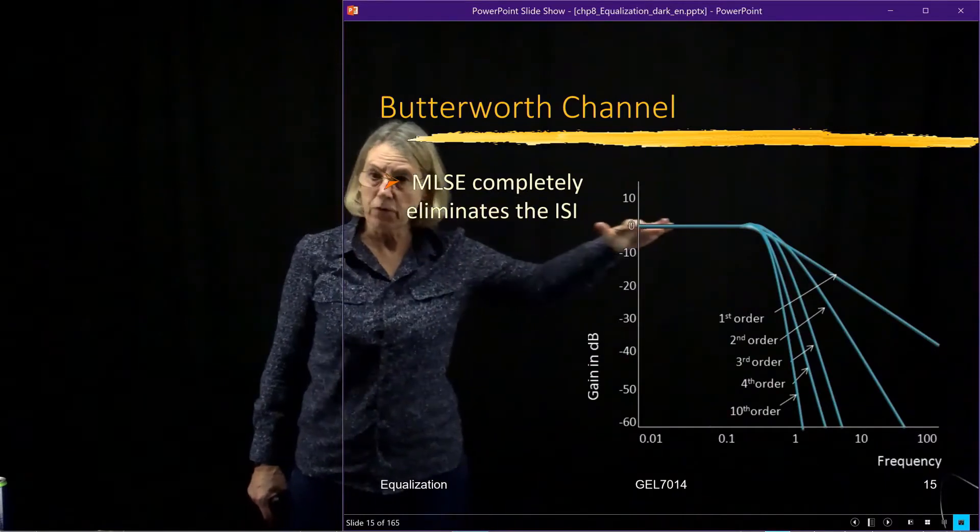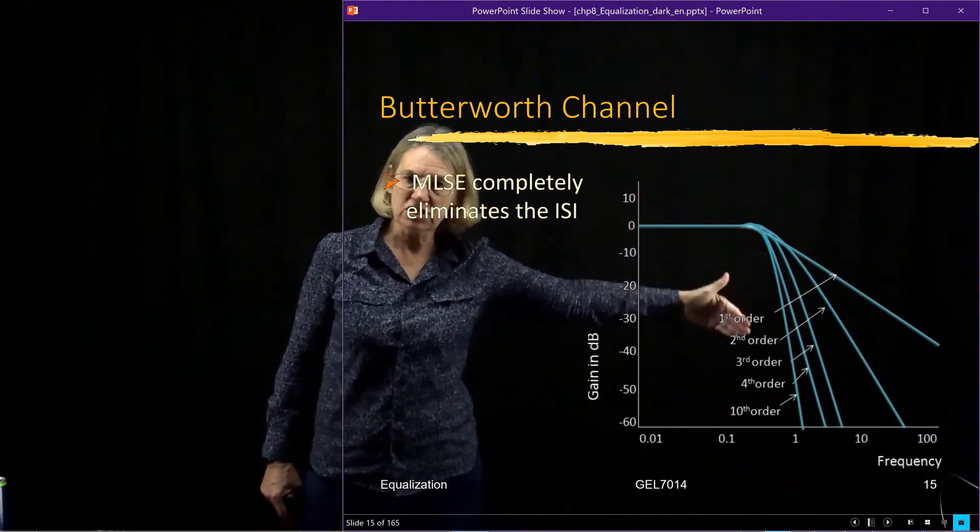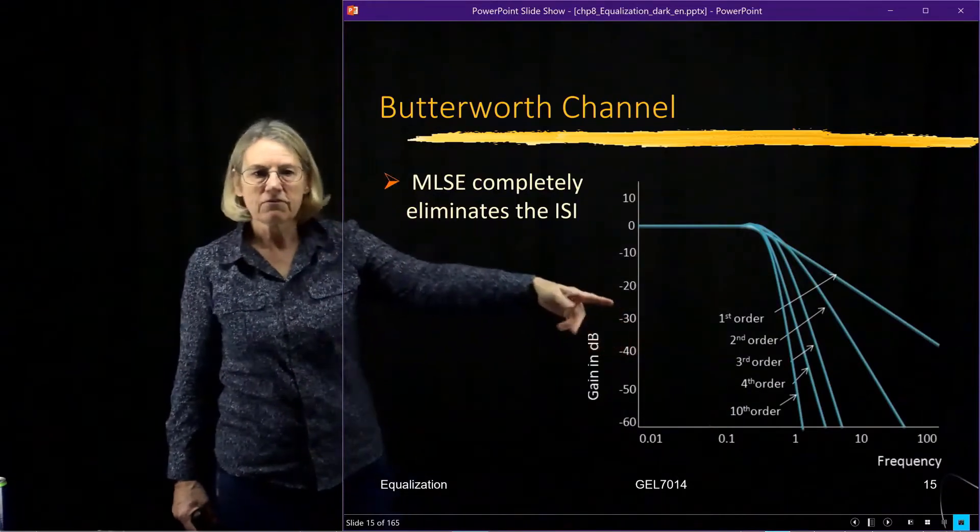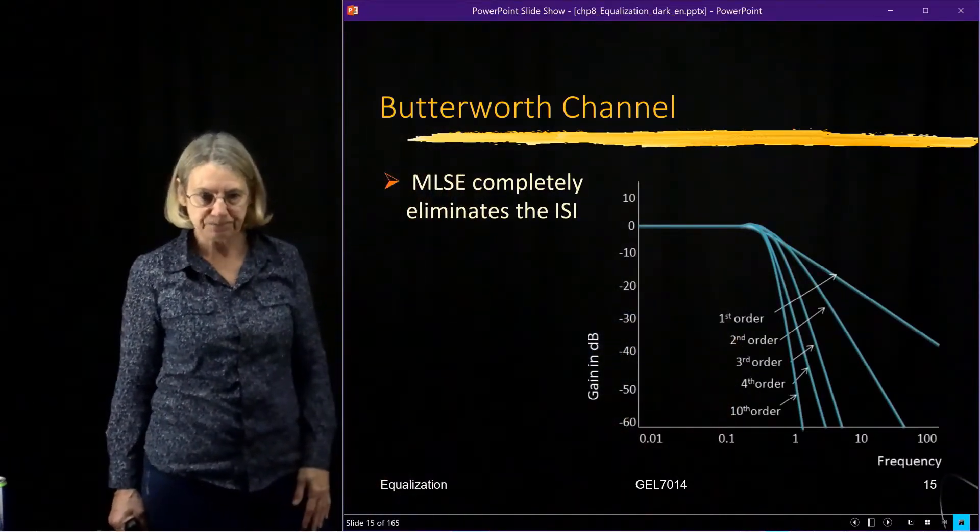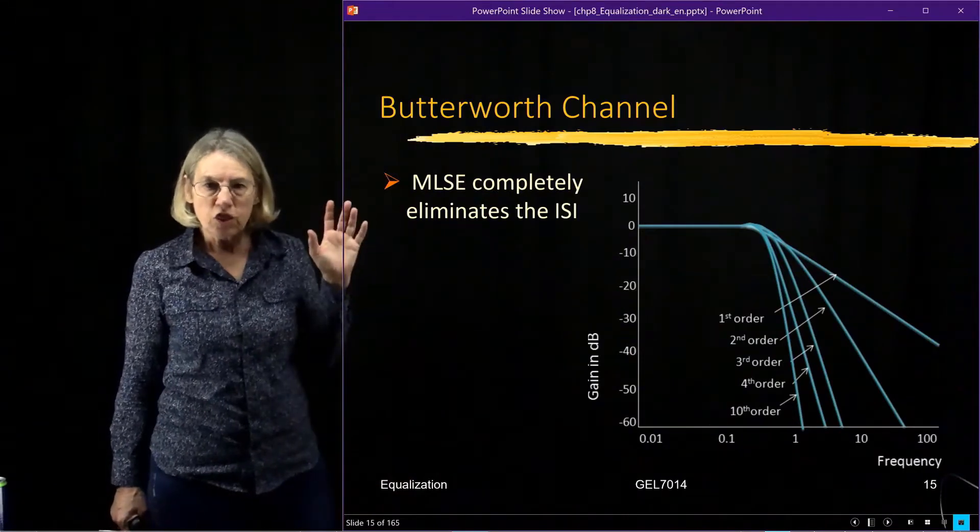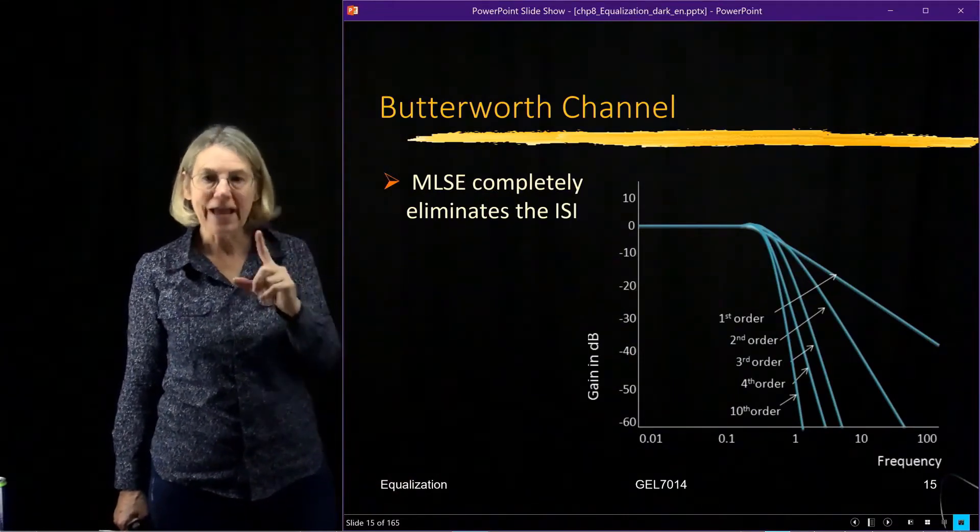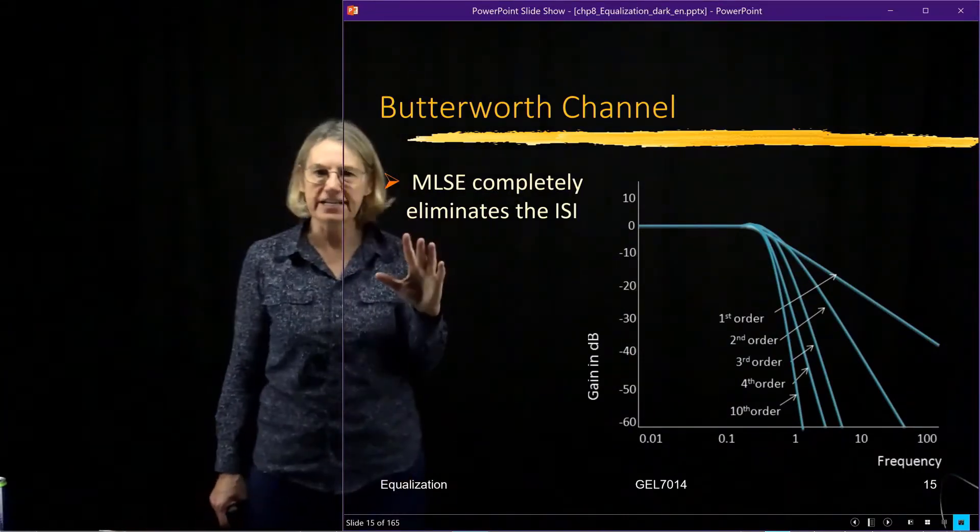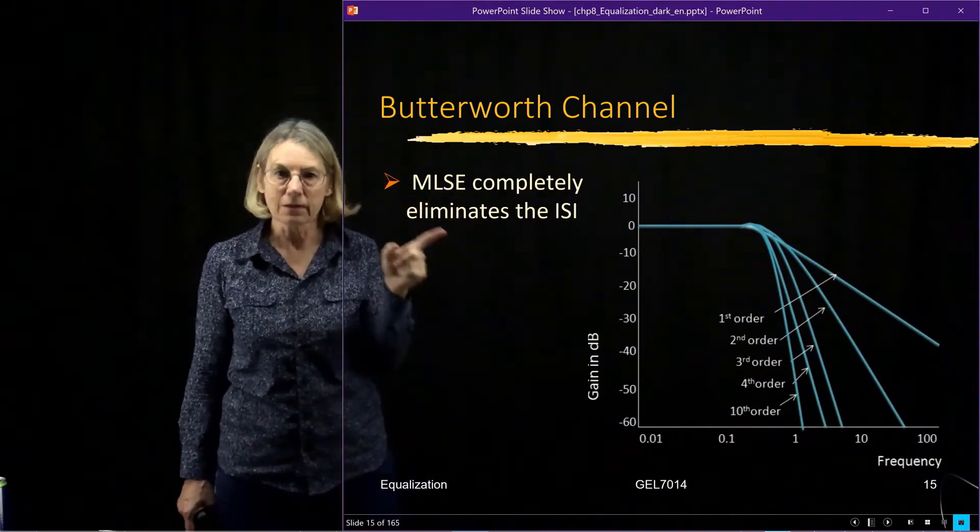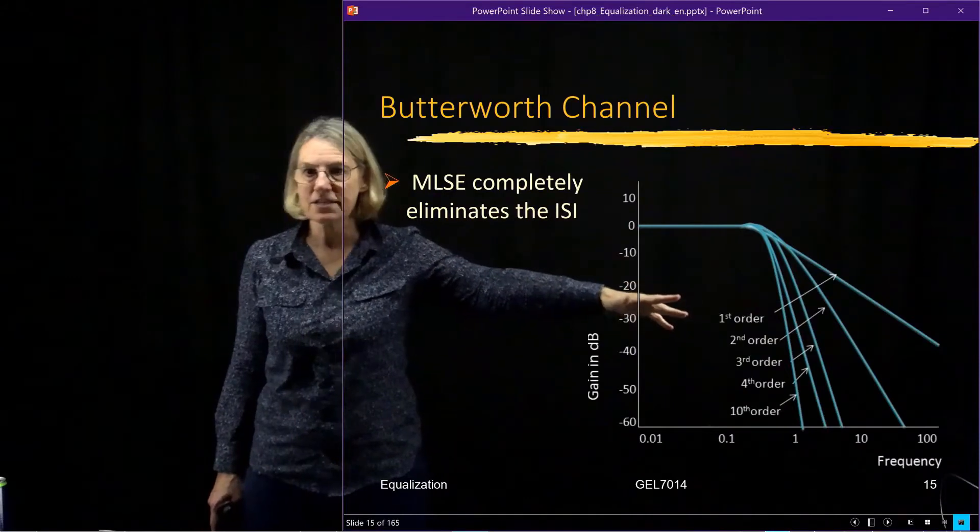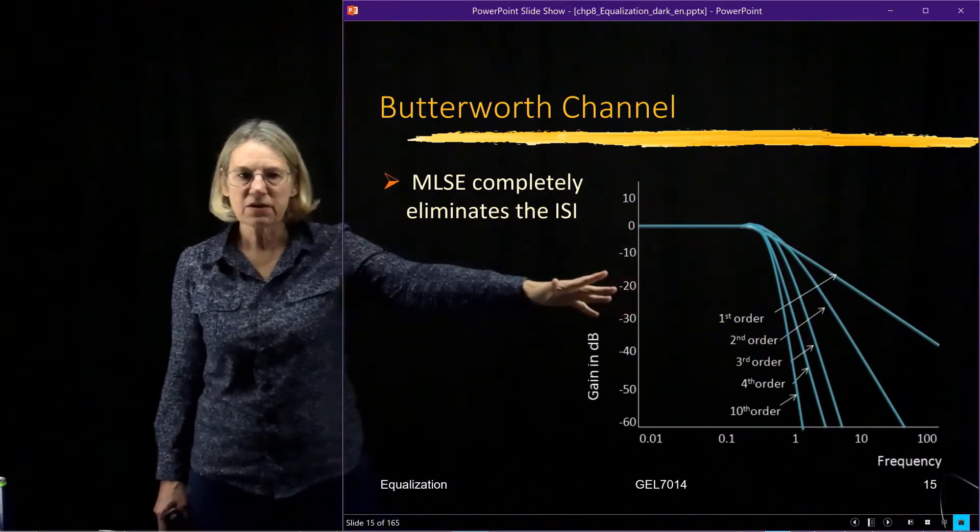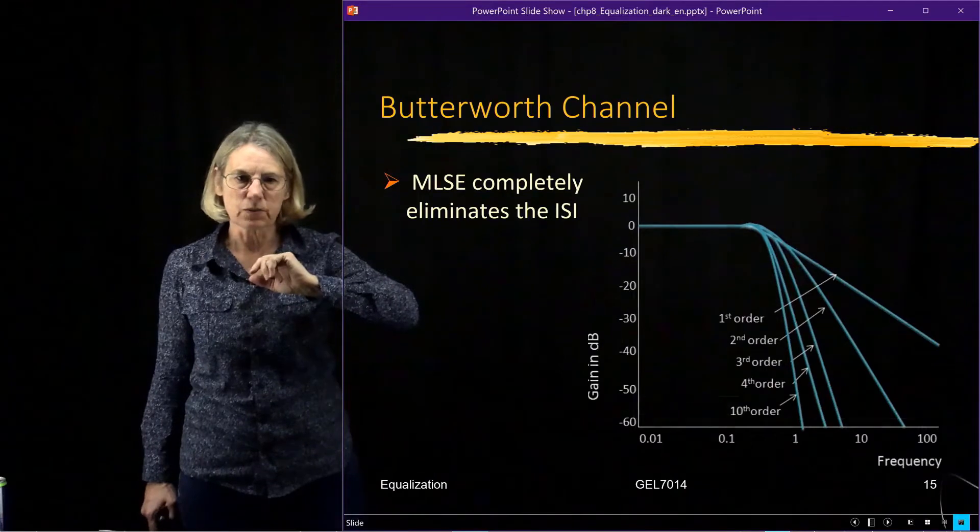And that roll-off, it's just the slope, which varies from one order of the filter to another. So these filters, if I said some channels, we could completely eliminate the ISI. This is one where we can completely eliminate the ISI. So there's some structure to this filter, which means that we get very good behavior with this one.